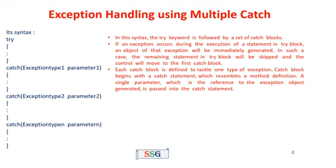In the syntax, the try block contains a set of statements. The try block checks whether an exception is raised or not. If an exception is raised, control transfers to one of the catch blocks. The catch blocks handle exception types: ExceptionType1, ExceptionType2, up to ExceptionTypeN, each with its own parameter. The try keyword is followed by a set of catch blocks.